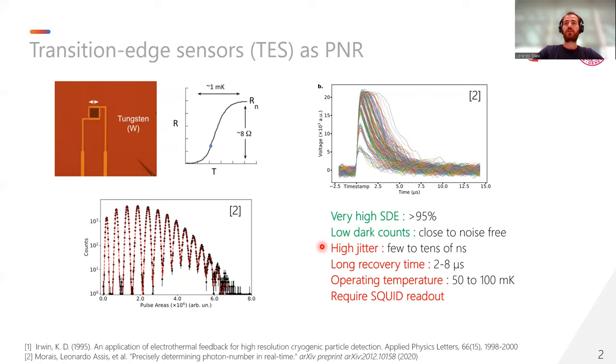First of all, they display very high jitter, tens of nanoseconds, a very long recovery time in the order of microseconds, and they need to be operated at extremely low temperature, which increases the complexity and the dimension of the cryogenic system. Lastly, they also need the SQUID readout that increases the complexity of the overall system.